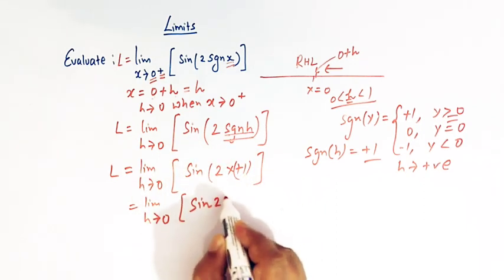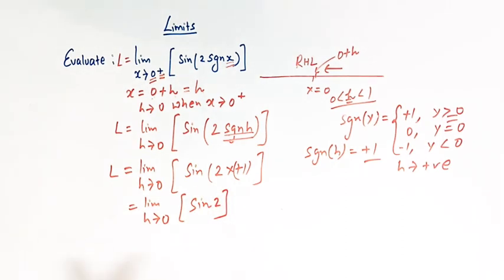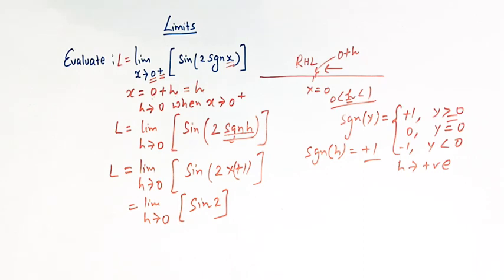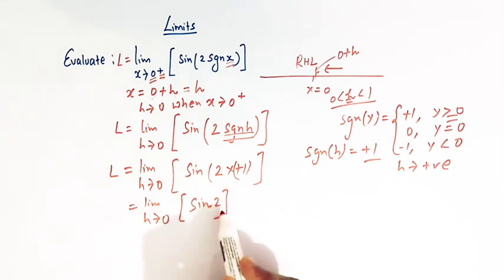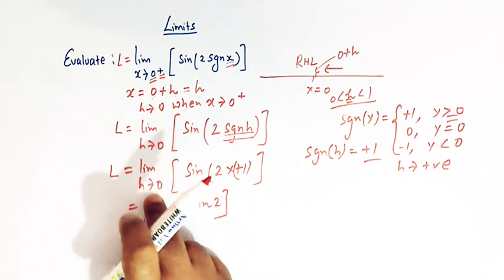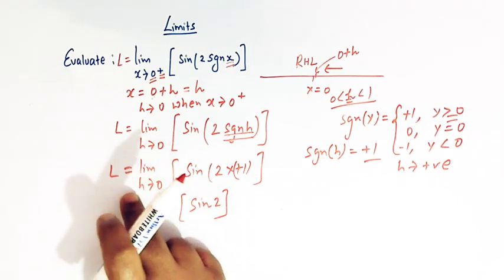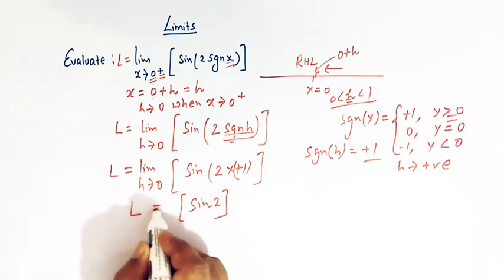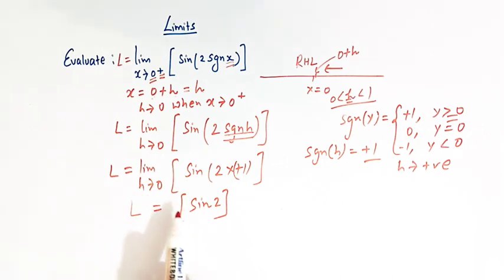This gives us greatest integer of sine 2. Since this term is independent of h, we can omit the limit notation. So L is simply equal to greatest integer of sine 2.